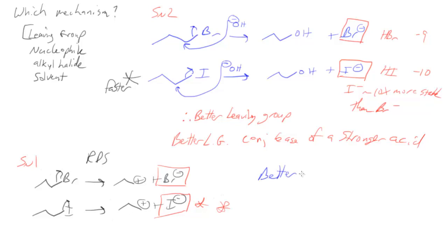Better leaving groups make both mechanisms faster. The downside of that is they do not help us choose between the two mechanisms or choose the more likely mechanism. So that's the leaving group effect.